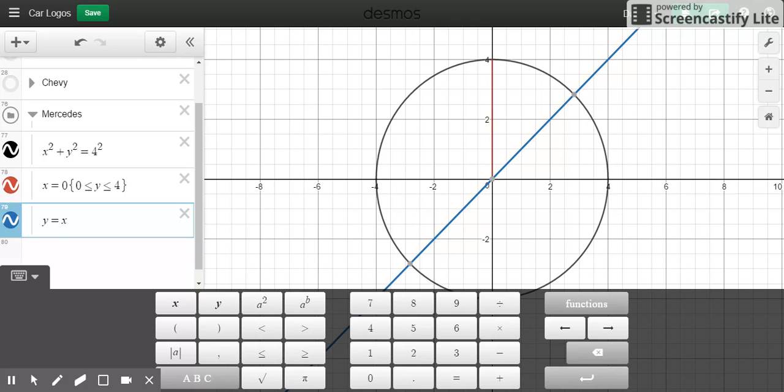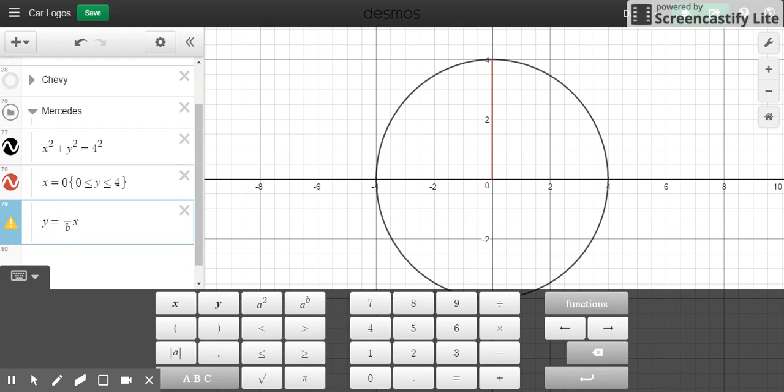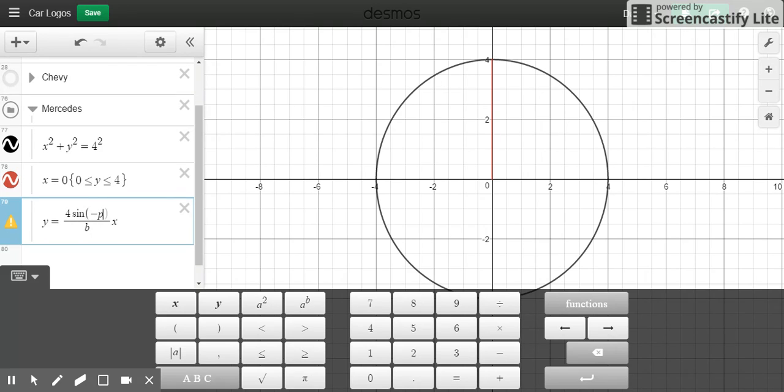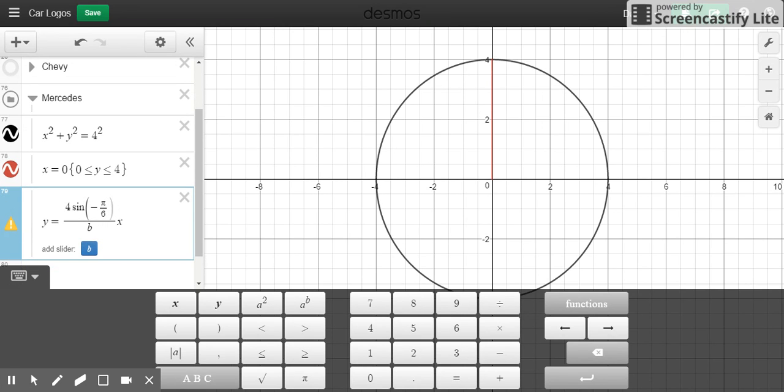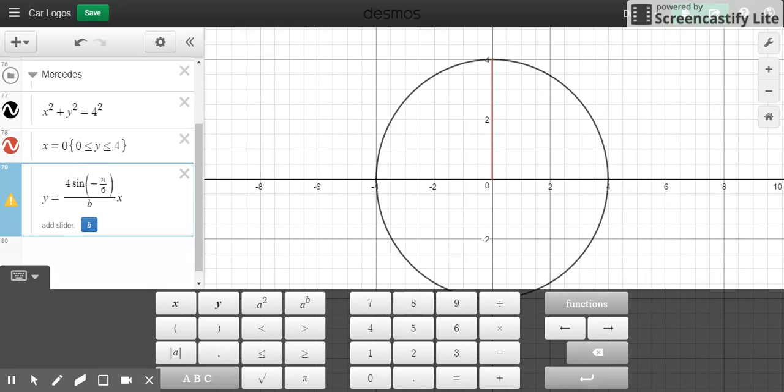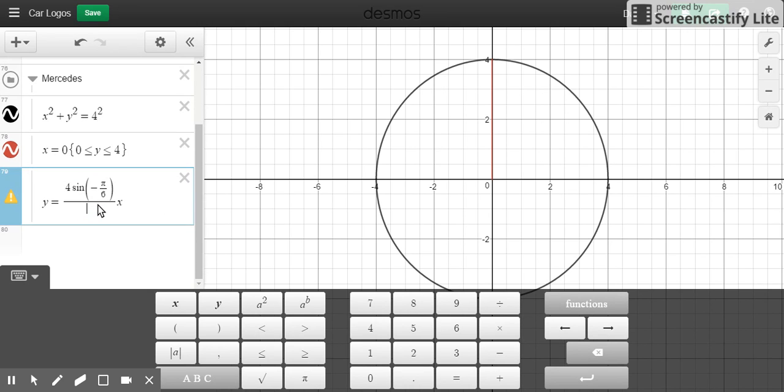As for what the slope is, it's going to be a fraction and the numerator is going to be the radius times the sine of the angle. So in this case it's going to be 120 degrees.